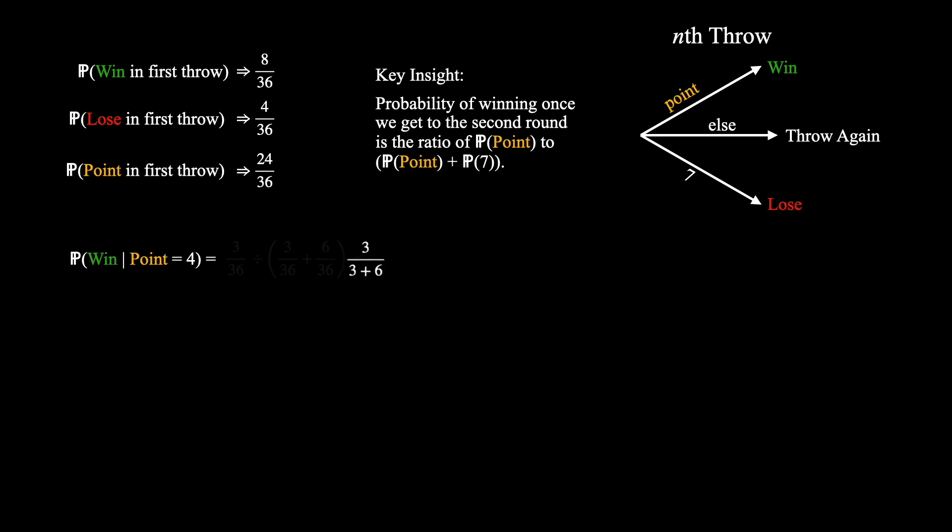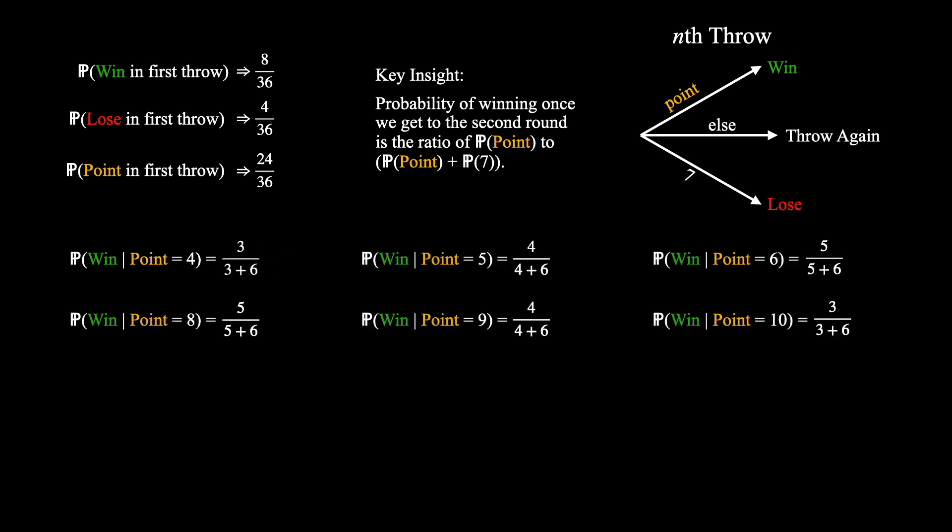We can now follow the same procedure for all the other possible point values. Now that we've computed the probability of winning given each of the individual possible point values, let's try to combine this information. In order to do this, recall that the law of total probability gives us that the probability of winning by throwing a point is equal to the sum over all potential point values of the probability of winning given that a point has a certain value x multiplied by the probability that the point is that value x.